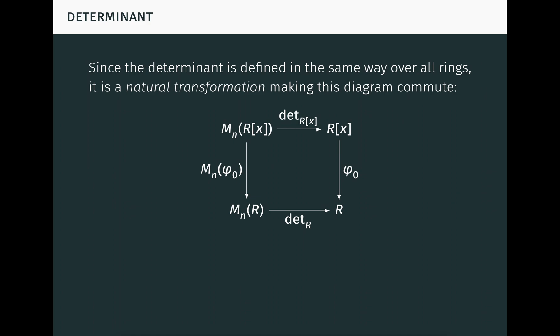All the arrows here are homomorphisms of the underlying multiplicative monoids of the rings. The arrow on the left going down is element-wise substitution of zero. Chasing the characteristic matrix xI minus A from the top left of the diagram shows that P_A of zero, which is obtained by going right then down in the diagram, equals the determinant of zero I minus A, which is obtained by going down then right in the diagram. That's the desired equation.